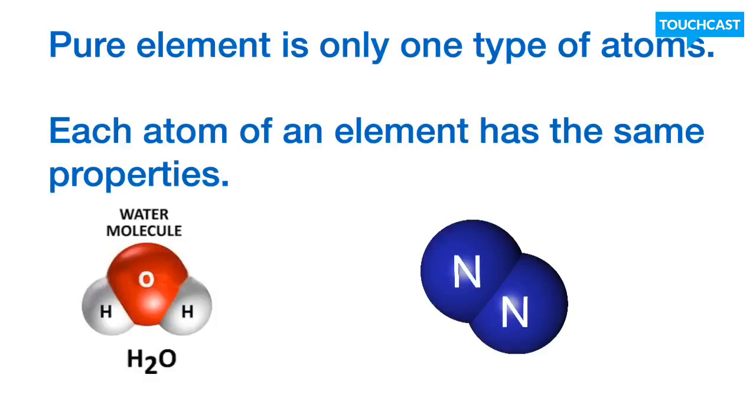So, if you look here, a pure element is going to be made of only one type of atoms. However, each of those atoms are going to have the same unique properties. So, every atom of an element will have its properties. Like, example, oxygen. Every atom of oxygen has the same exact properties as another atom. And, if you get a large group of them together and it's only oxygen, well, then that's going to be a pure element.